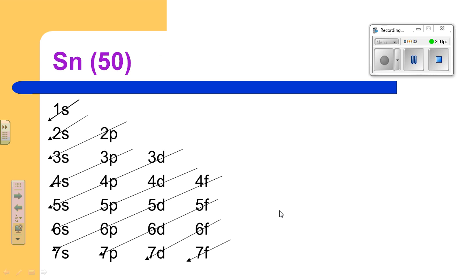So let's use the diagonal rule to write the electron configuration for tin. For tin we need 50 electrons.